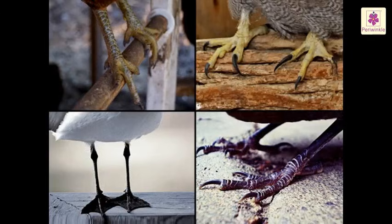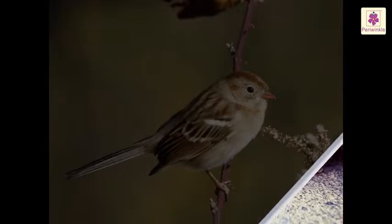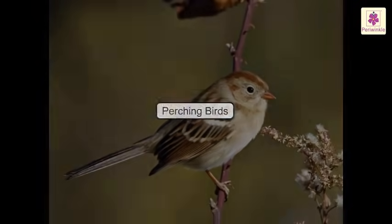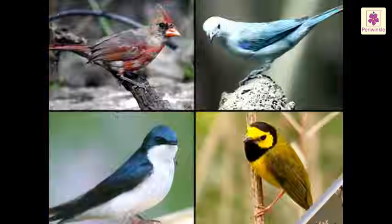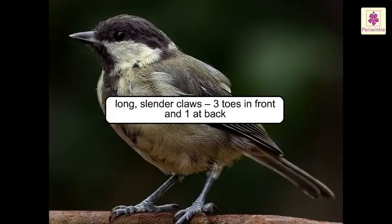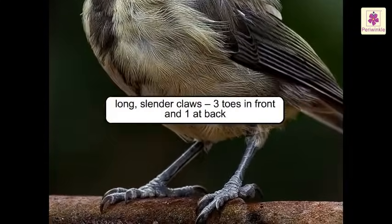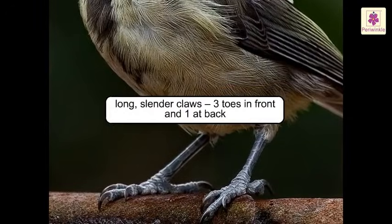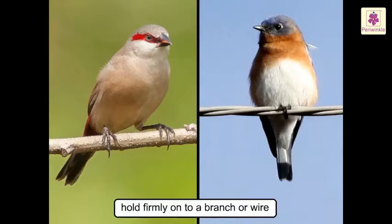Birds are divided into different categories based on their feet and claws. Perching birds: sparrows and other perching birds have long, slender claws with three toes in front and one at the back. They use these toes to hold firmly onto a branch or a wire.